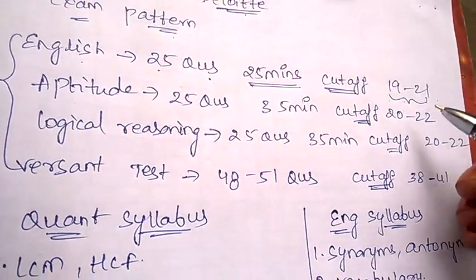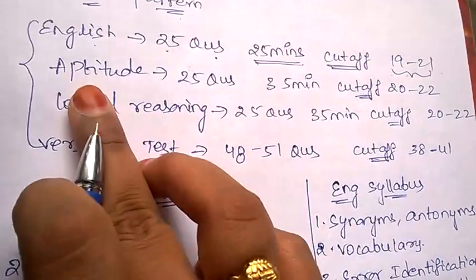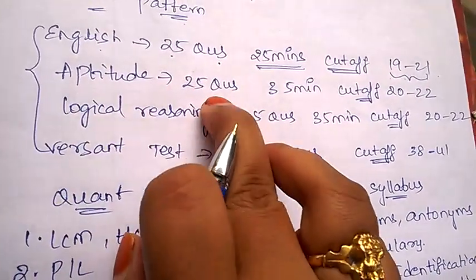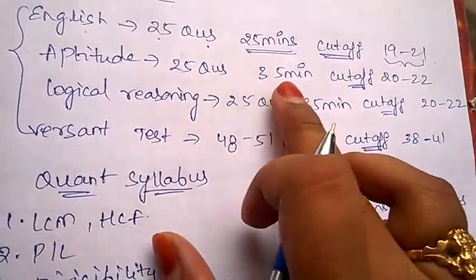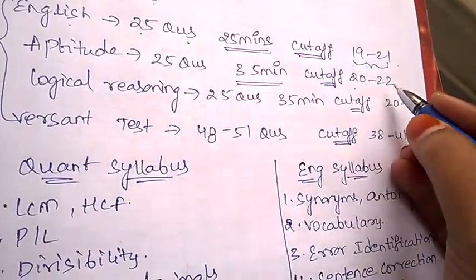Coming to aptitude, there will be 25 questions asked and the time is 35 minutes. The cutoff is in between 20 to 22.